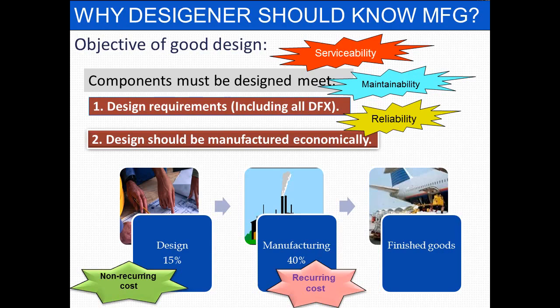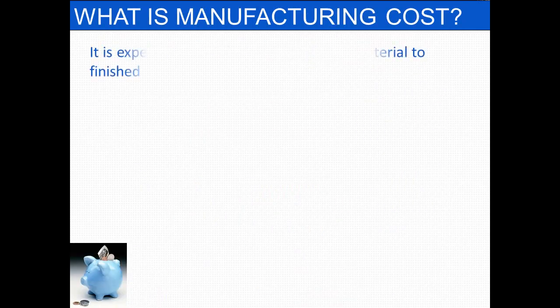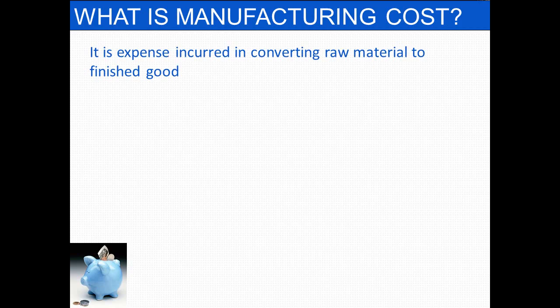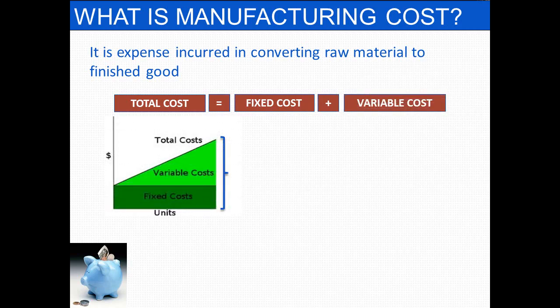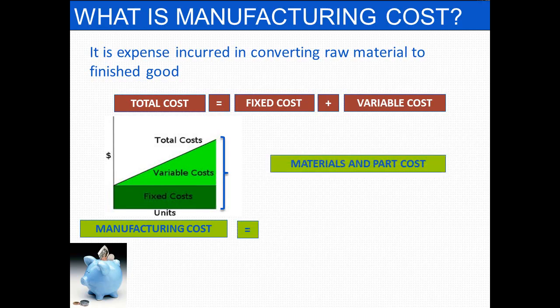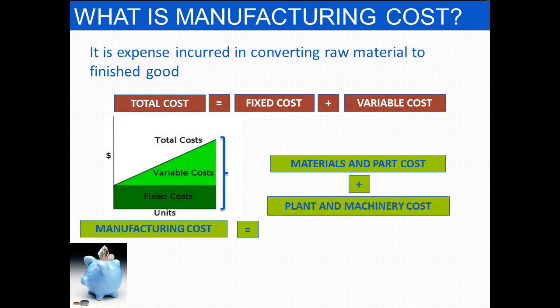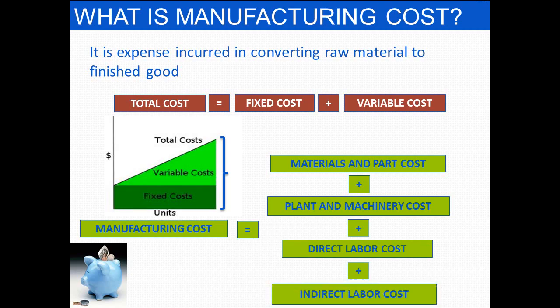So it's very essential for a designer to know manufacturing. What is manufacturing cost? It is the expense incurred in converting raw material into finished goods. At a very top level, total cost equals fixed cost plus variable cost. Manufacturing cost equals material cost and part cost, plus plant and machinery cost, plus direct labor cost, plus indirect labor cost.